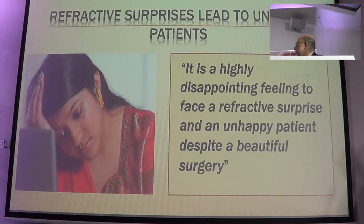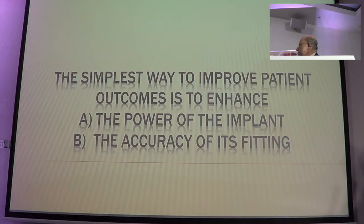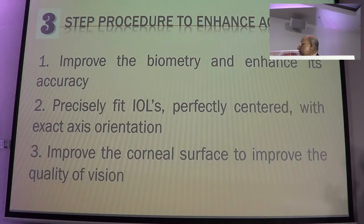You can give excuses all you want, but patients are not going to accept it. The way to improve patient outcomes is to enhance the power and accuracy of the spreading. There is a three-step procedure to enhance accuracy: improve the biometry, be precise with the grafts, and improve the quantity — something which people don't seem to talk about.